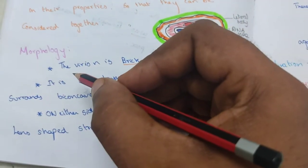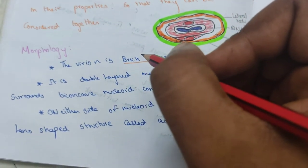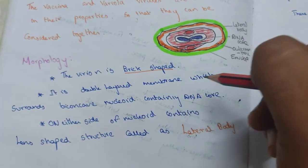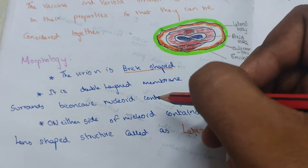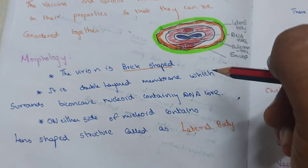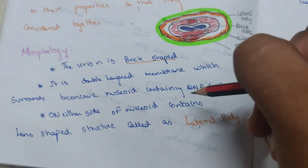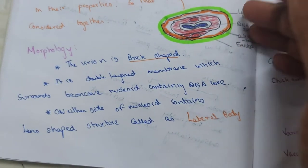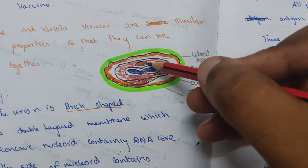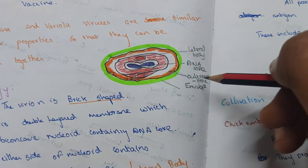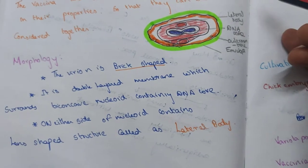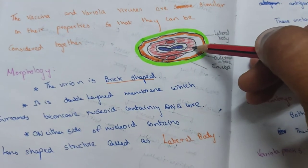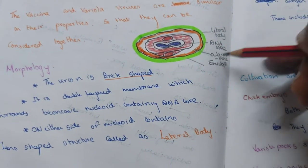Regarding morphology, the virion is brick-shaped with a double-layered membrane which surrounds a biconcave nucleoid containing a DNA core. On either side of the nucleoid there is a lens-shaped structure called the lateral body. The outer envelope and outer membrane surround this structure.